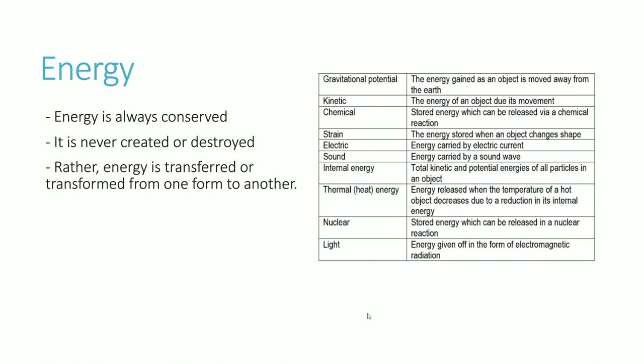Energy is simply the ability to do work on an object — we'll go through the concept of work towards the end of this video. Essentially, energy is what causes things to happen in the real world. The main things to be aware of: energy is always conserved. You've got various forms of energy, like gravitational potential energy — the energy gained by an object moved away from the Earth's surface — and kinetic energy, which is the energy of an object as a result of its movement.